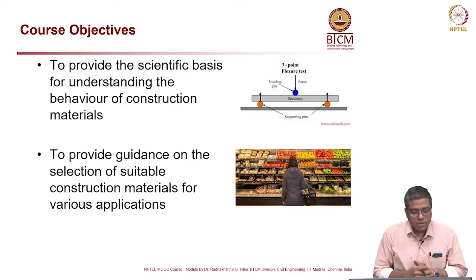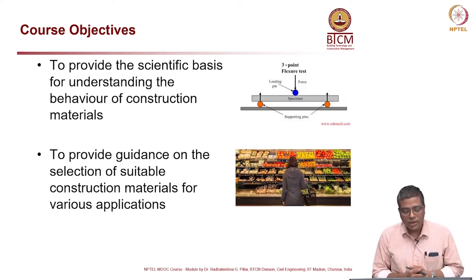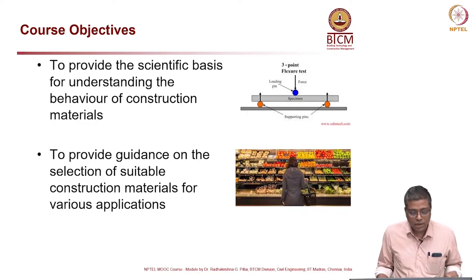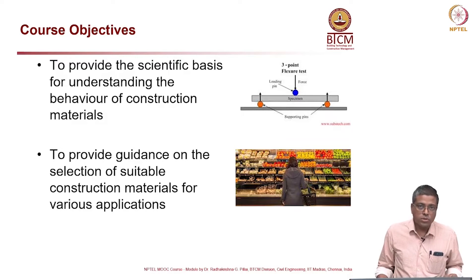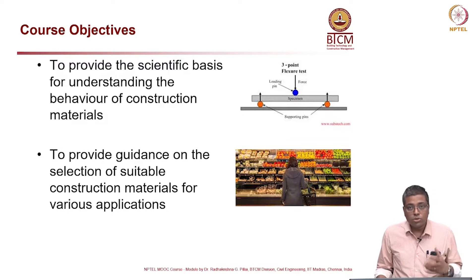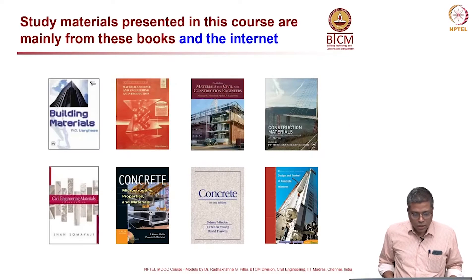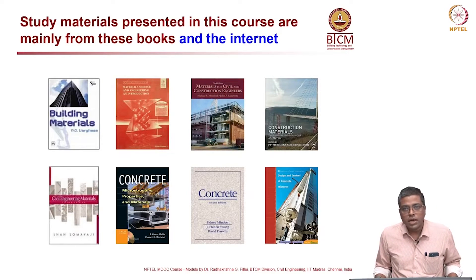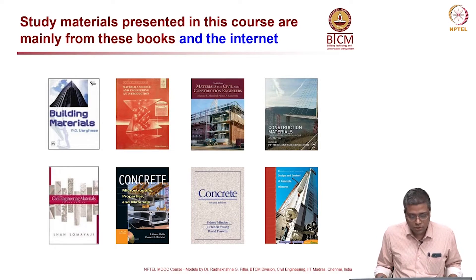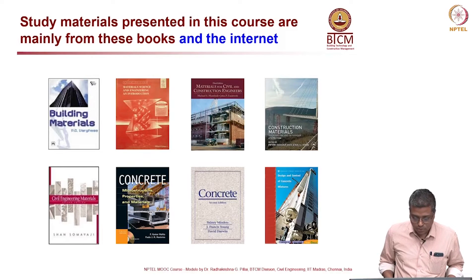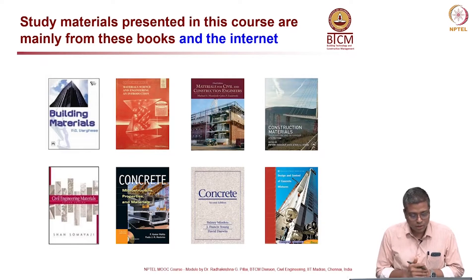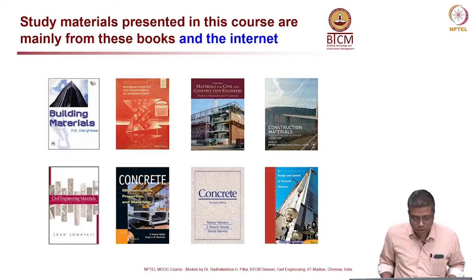Now let us get into the course material. What is the objective of this course? The main objectives are two: to provide the scientific basis for understanding the behavior of construction materials, and to provide guidance on how to choose a suitable construction material for various applications. Different study materials have been used for developing this course — various books and also a lot of information from the internet, various sources. So a lot of information has been put together.